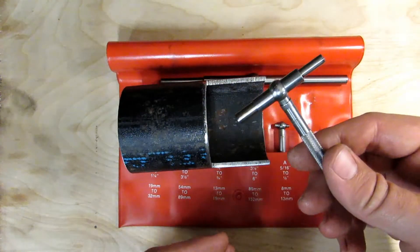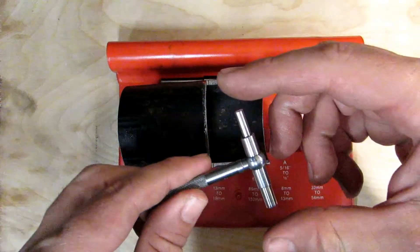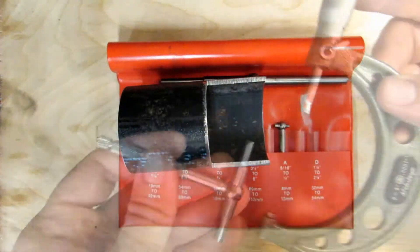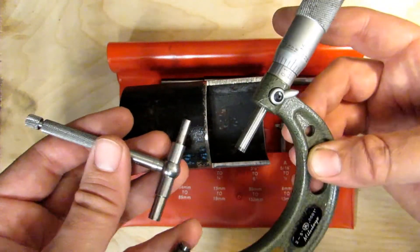At that point, you take your regular set of micrometers and you measure across these pistons. There's a bit of a trick to this and it does take a little practice.